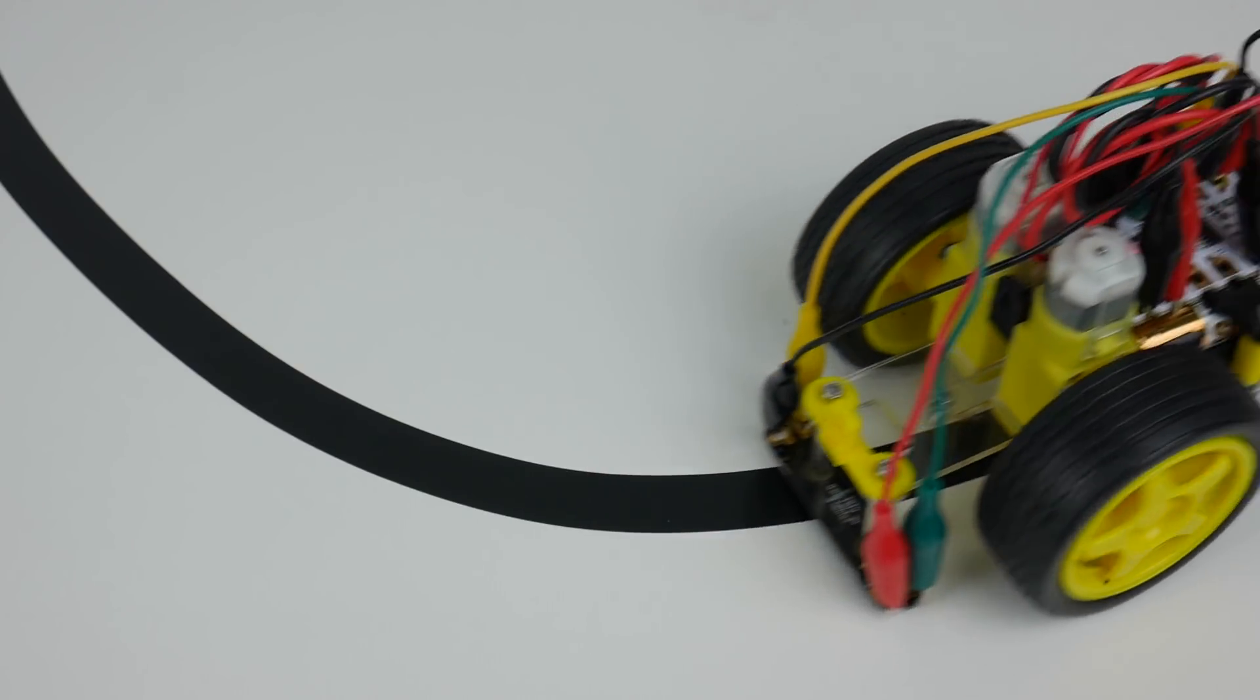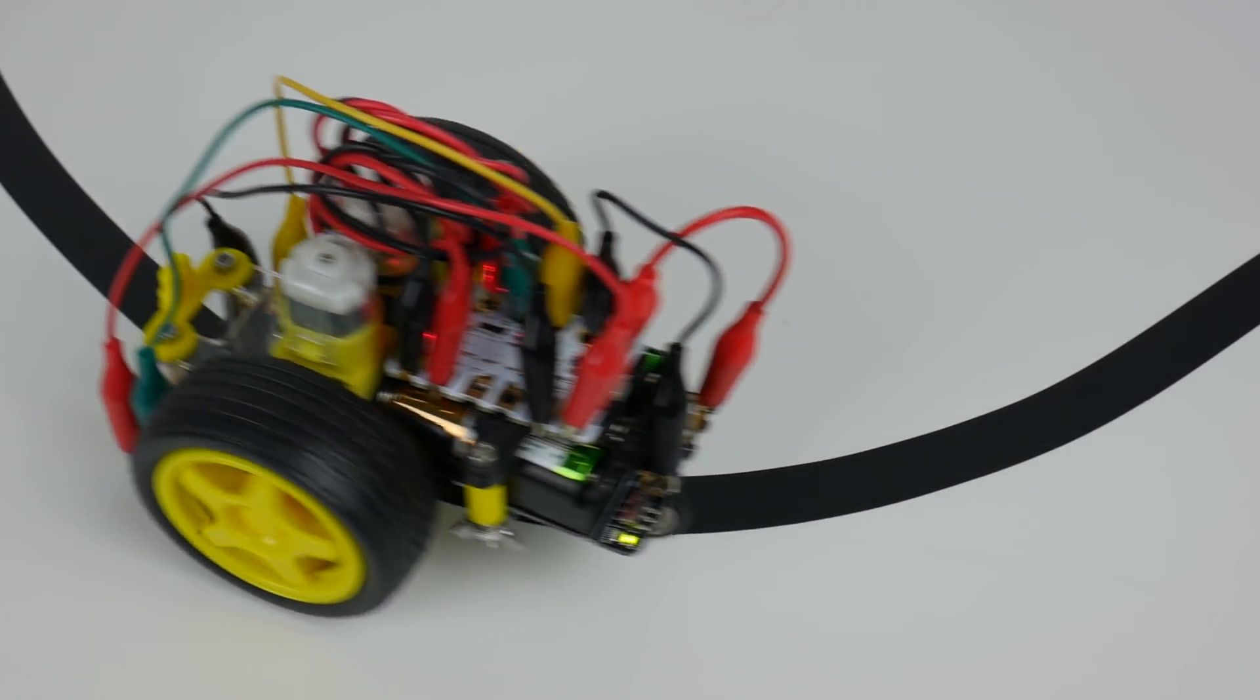The Crumble also has a built-in motor driver so you can connect up to two motors directly to the Crumble. You can have buggies, wind turbine models, etc.